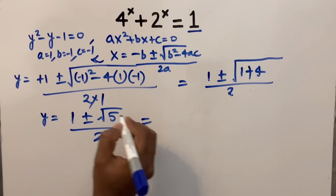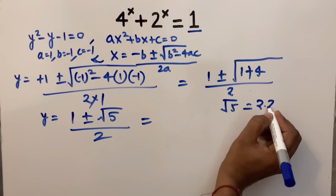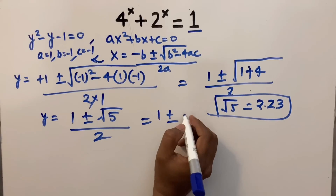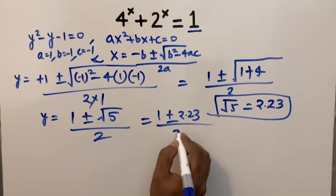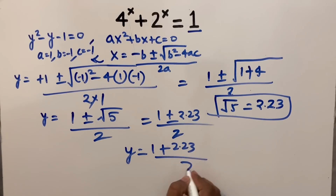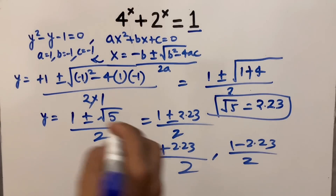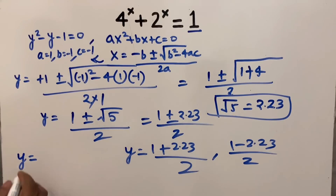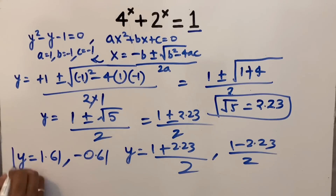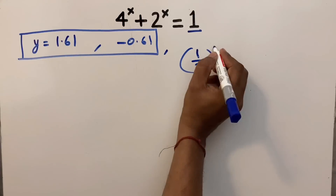So y equals 1 plus or minus square root of 5, divided by 2. Since square root of 5 equals approximately 2.23, this becomes 1 plus or minus 2.23 divided by 2. Therefore y equals (1 plus 2.23) divided by 2, or (1 minus 2.23) divided by 2, giving y equals 1.61 or y equals minus 0.61.